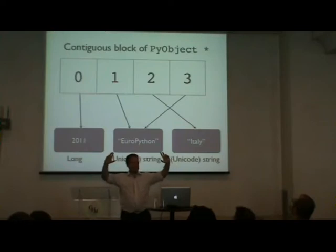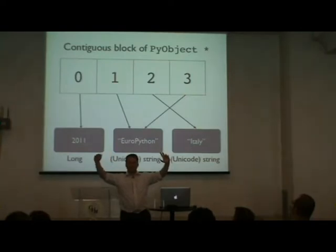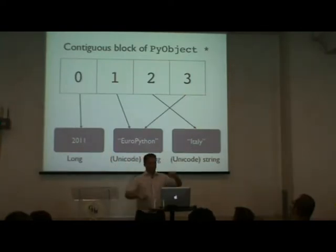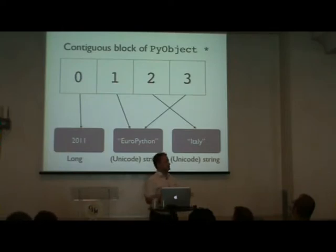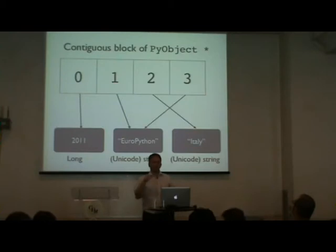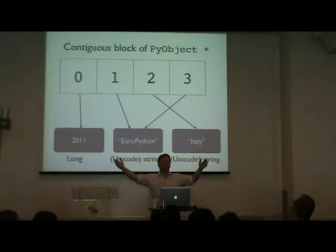The basic concept of a list is you have a contiguous block of data. You want to find something that's in position 3 — you offset to position 3 and get the reference to find out what that object is. People talk about this list lookup as being an O(1) lookup. You can do random access anywhere inside the list — it's basically offset, lookup, and dereference.